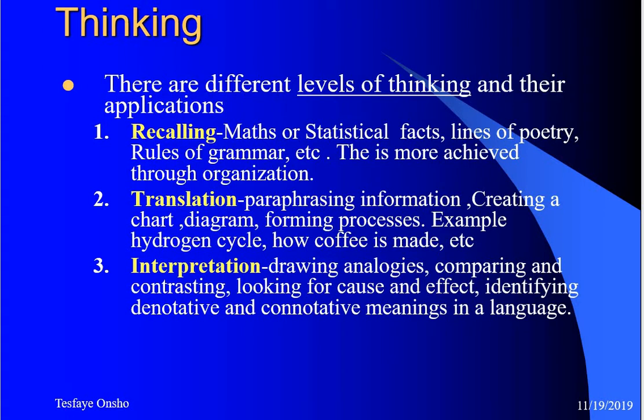Translation is paraphrasing information — saying it in a different way, or putting it in a different form, like creating charts, diagrams, or process diagrams. We don't exactly remember the original information word for word, but we do some processing to remember it. For example, the water cycle — a whole complex process — can be remembered within a small diagram. How coffee or tea is made can be put in a diagram and remembered through those visual representations.